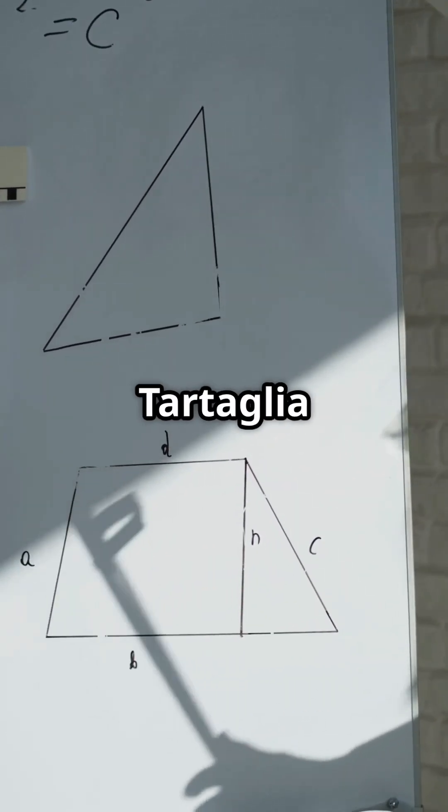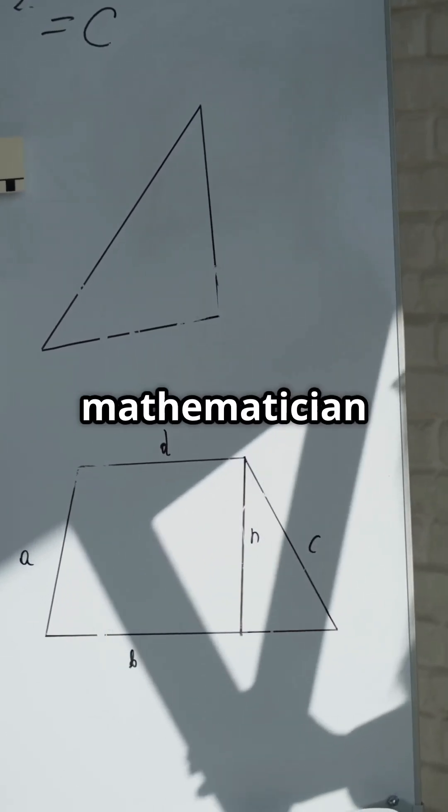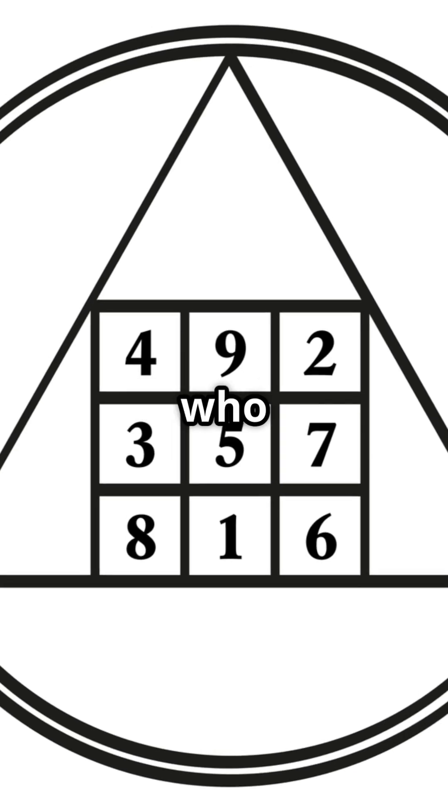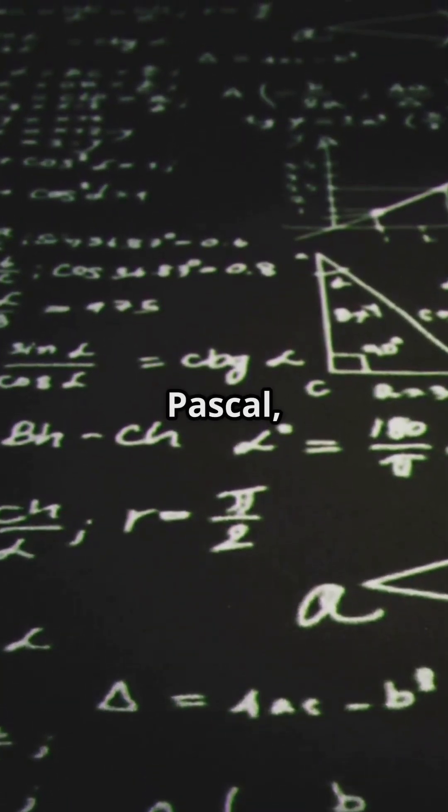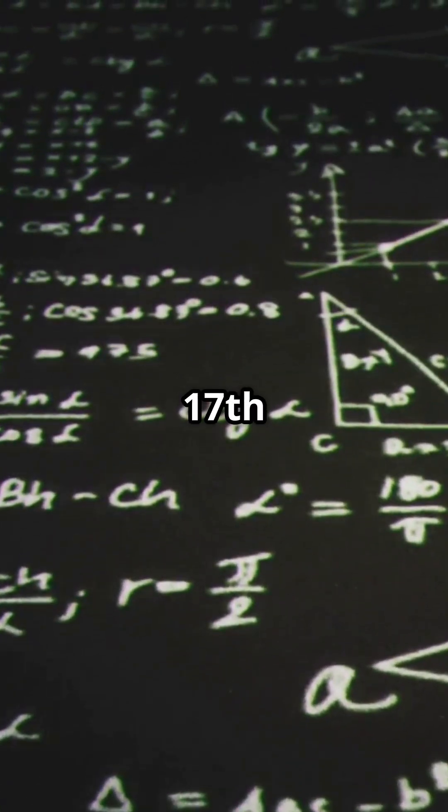For example: 1, 3, 3, 1, 1, 4, 6, 4, 1. In Italy, it's called the Tartaglia triangle, named after mathematician Niccolò Fontana Tartaglia, who described it in the 16th century. In France, it's known as Pascal's triangle, after Blaise Pascal, who studied it in the 17th century.